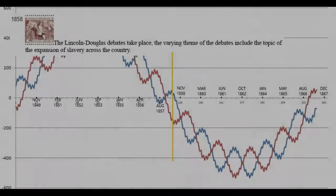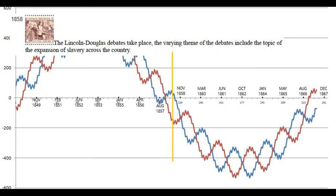In 1858 the Lincoln-Douglas debates take place, with the expansion of slavery as a key theme. We've now crossed the zero point and are heading down into minus territory. I should note that the smaller year waves shown on screen are slightly off — they should be stretched to the end — but it doesn't matter much because the main thing is the big 19-year wave.